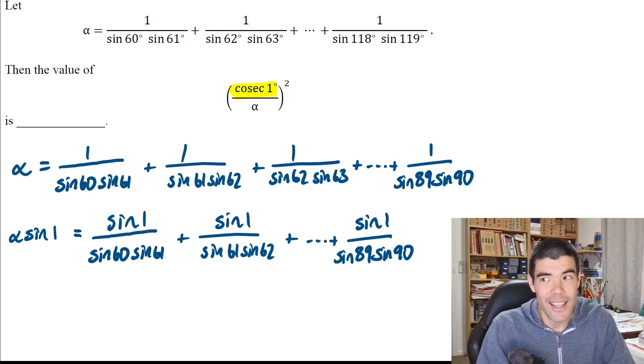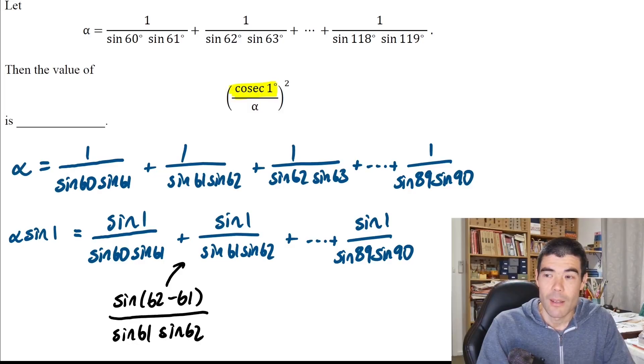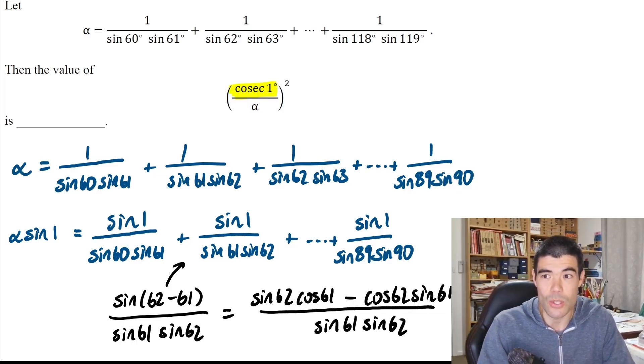This is where I got stuck and couldn't see how to go further. But what we can do is write the 1 degree as a difference. For example, sine of 1 can be written as sine of 62 minus 61. That's good because we can expand that using a compound angle formula as sine 62 cosine 61 minus cosine 62 sine 61.